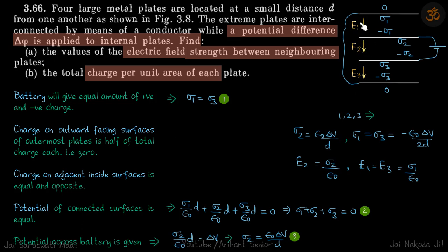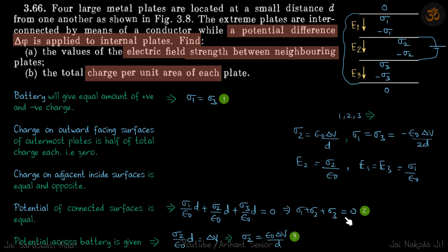Going from one connected plate to the other, the potential difference should be zero. Starting from here, the potential difference across each pair of plates is sigma one by epsilon times d, sigma two by epsilon times d, and sigma three by epsilon times d. Adding these three gives sigma one plus sigma two plus sigma three equals zero.